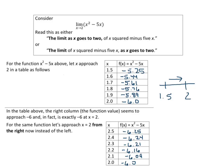Now let's look at the table in the bottom for the same function. Let's approach 2 from the right now instead of the left. We are approaching 2 from the left-hand side, and we're going to start off at 2.5 now. So we're coming in from the right-hand side. So notice as you go down your table of values, you have negative 6.25, negative 6.24, negative 6.21, negative 6.16, negative 6.09, and finally at 2, negative 6.